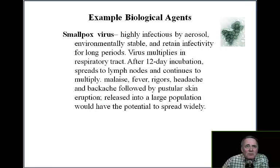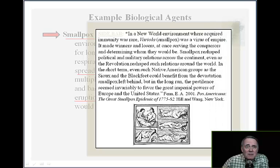In a new world environment where acquired immunity was rare, variola — that is, smallpox — was a virus of empire. It made winners and losers, at once serving the conquerors and determining whom they should be. Smallpox reshaped political and military relations across the continent, even as the revolution reshaped such relations around the world. Even Native American groups such as the Sioux and the Blackfeet could benefit in the short term from the devastation smallpox left behind, but in the long run the pestilence seemed invariably to favor the great imperial powers of Europe and the United States. This is from the book by Finn, 2001, Pox Americana: The Great Smallpox Epidemic of 1775–82.